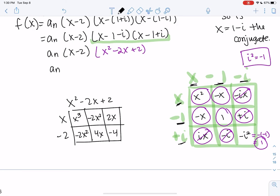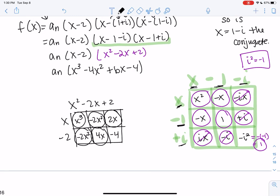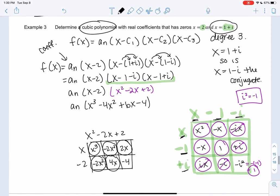And so then we just get a sub n and then all this. We get x cubed, and then we get minus 4x squared, 6x minus 4. And so this would be an example of a polynomial with real coefficients. All these coefficients are real numbers. There's no i's in there. And it has those three zeros that we talked about.